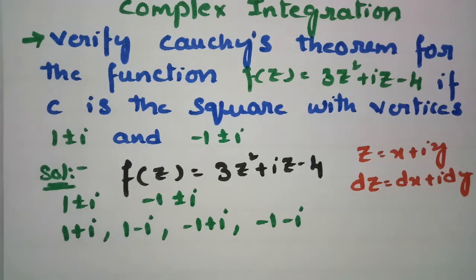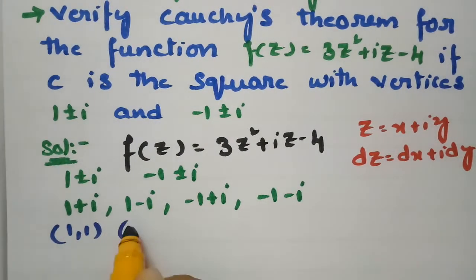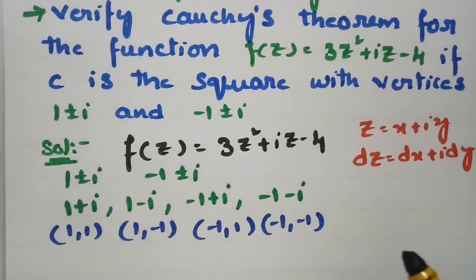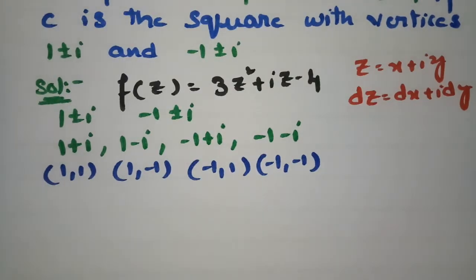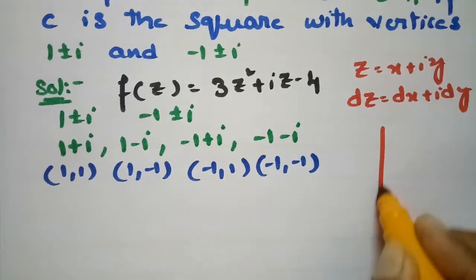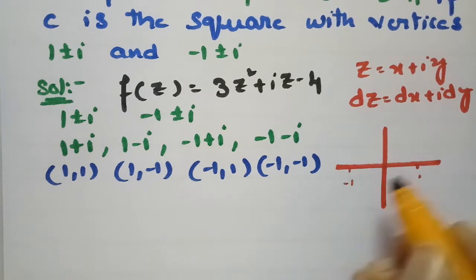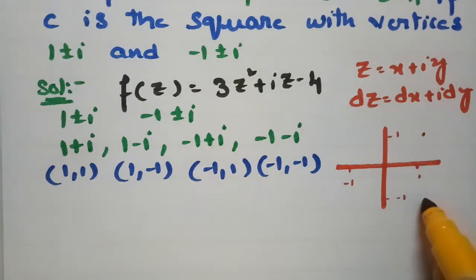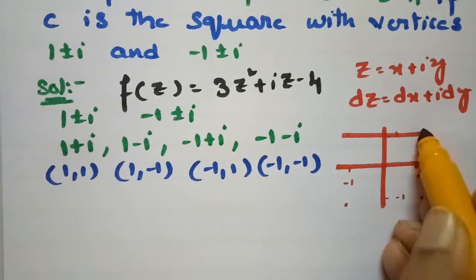Transforming into the xy-plane, the points become (1,1), (1,-1), (-1,1), and (-1,-1). This is the real axis and this is the imaginary axis. The x-axis and y-axis are shown, and the point (1,1) is here, (1,-1) is here, (-1,1) is here, and (-1,-1) is here, forming the required square.